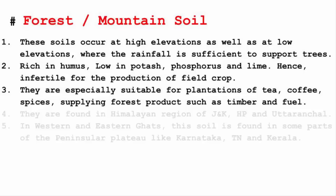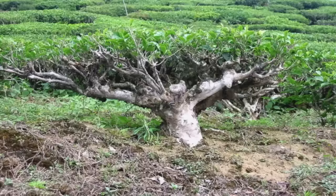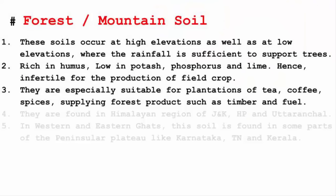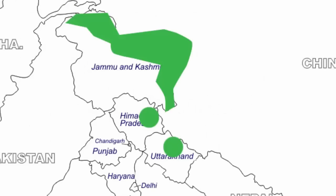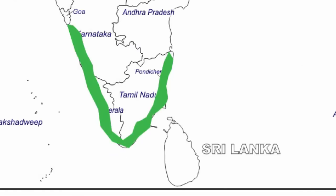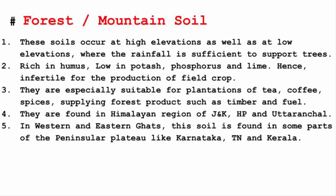Tea, coffee and spices come from shrubs or roots, while timber and fuel come from long trees. Regular crops don't have strong enough roots to hold on to soil at elevation. These soils are found in the Himalayan region of Jammu & Kashmir, Himachal Pradesh and Uttaranchal. In the western and eastern Ghats, this soil is found in parts of Karnataka, Tamil Nadu and Kerala — all places with mountains, sufficient rainfall, and ideal conditions for tea, coffee, spices and timber.